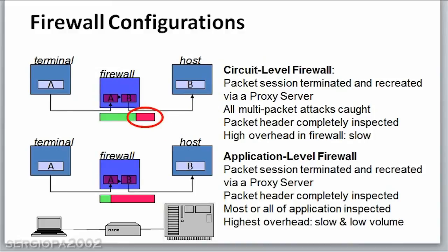The entire header of the data package is inspected by circuit level firewalls. This guarantees that all or most multi-packet attacks are going to get caught, but it creates a significant overhead in the firewall because terminating one session and recreating or restarting another session takes a lot of work. This gives an additional level of security, and since the firewall has to recreate the session, there are even more fields and more data that the firewall can inspect, and more attacks that can be caught.